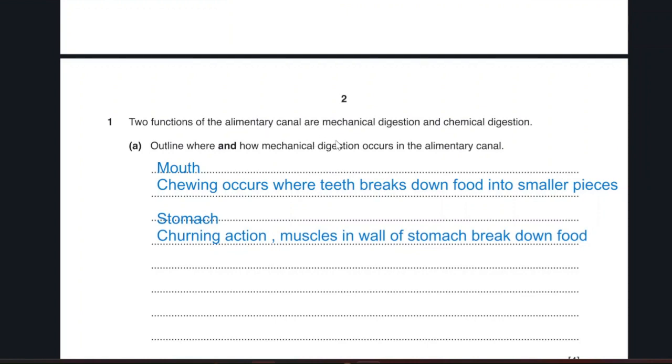Mechanical digestion occurs in two areas: in the mouth and in the stomach. How? In the mouth, there is chewing where the teeth break down the food into smaller pieces. In the stomach, churning action - the muscles in the wall of the stomach break down the food.